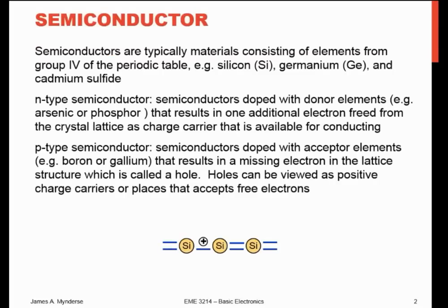So what are semiconductors? They're elements from group four of the periodic table. Silicon is very common, germanium is common, cadmium sulfide — and they all have similar but different electrical properties.